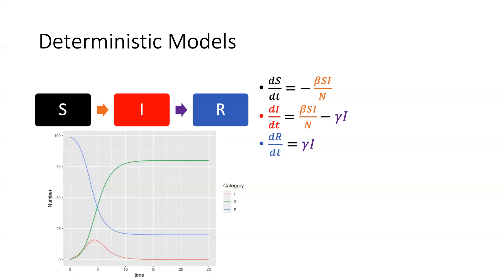Now we're in the infected compartment. How do we go from this red compartment to the blue recovered? That's DI over DT — change in I over change in time. Remember that there is an arrow going into I as well as an arrow going out. Arrows going into a compartment are positive, so we have beta SI over N going in — the same flow that was leaving the S compartment. Think of it like tubs of water with arrows as pipes connecting them. If you leave through one pipe, you enter through another with no leakage. If you want people to go in a different direction, you need a different arrow with a different equation to a different compartment.